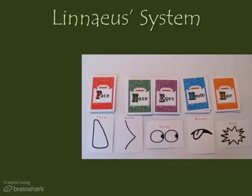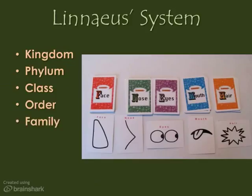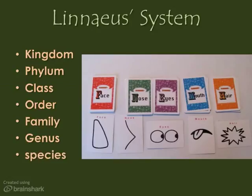There are a lot of mnemonic devices that help people remember all of the different levels of classification. Here's the one I use to this day. There are five stacks of cards in the image. So here's my system: Keep — kingdom; Piling — phylum; Cards — class; On — order; Five — family; Giant — genus; Stacks — species. Keep piling cards on five giant stacks: kingdom, phylum, class, order, family, genus, species.